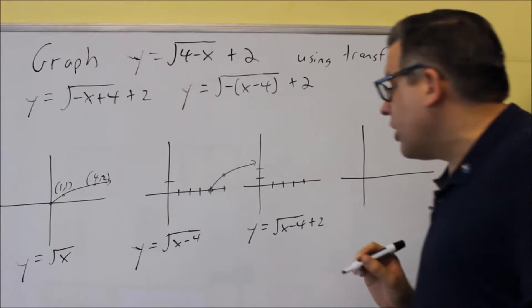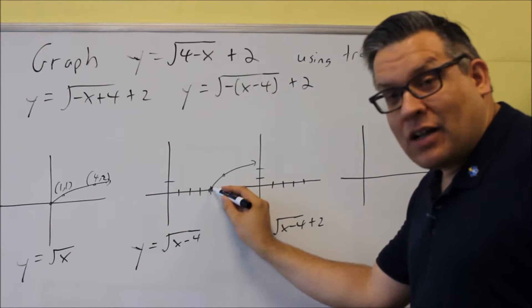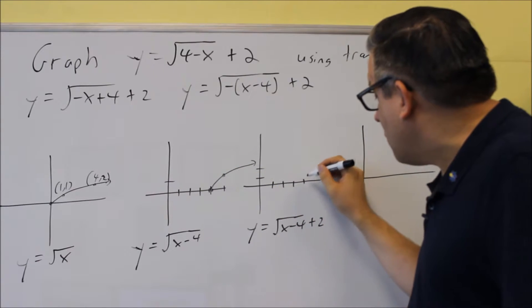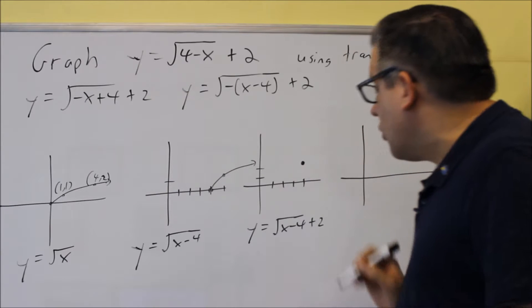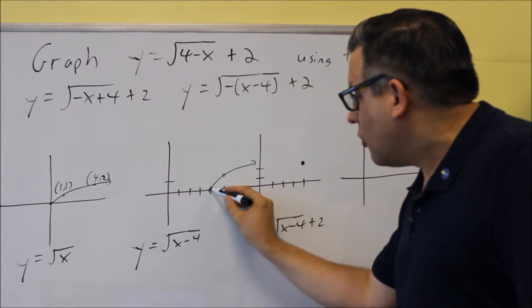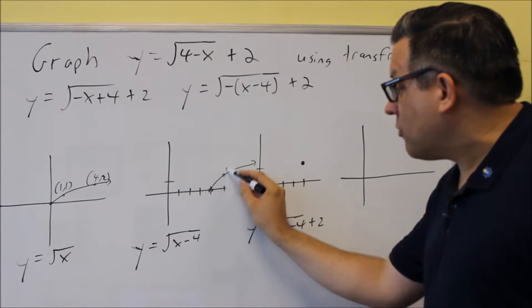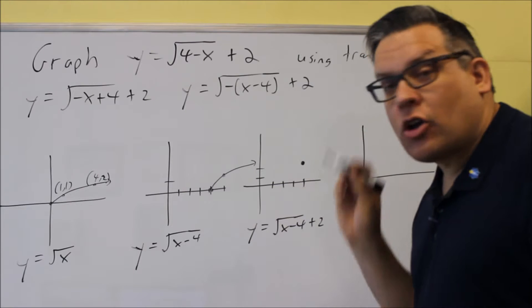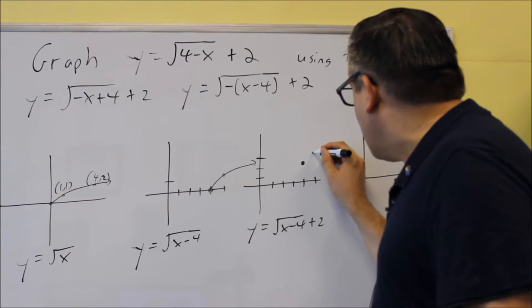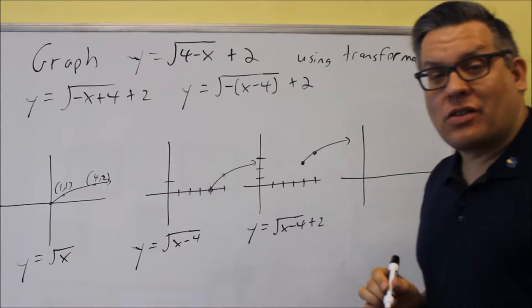So, square root x minus 4 plus 2. What that does, it's going to take this graph here and move the entire graph up two units. So, this is still going to stay here at four. But, the whole thing gets shifted up two units. So, instead of it being here on the x-axis, that gets moved up two units. So, that means that the graph now is going to go through there. It's going to start at 4, 2. So, 4 here, move the whole graph up two units. This point also gets moved up two units. So, it was at 1. Now, it'll be at 3.